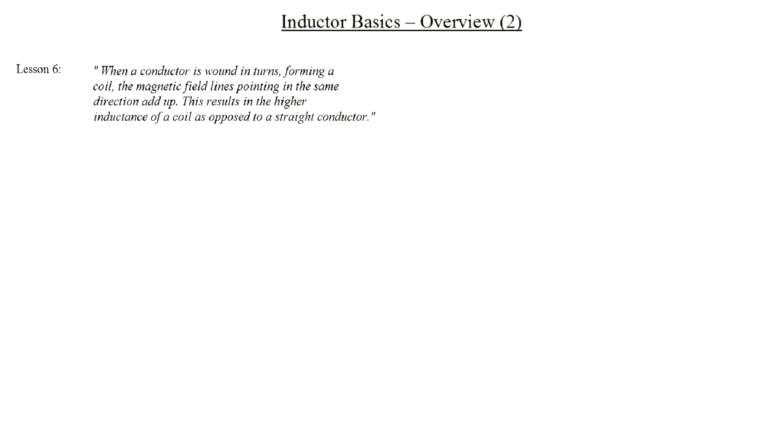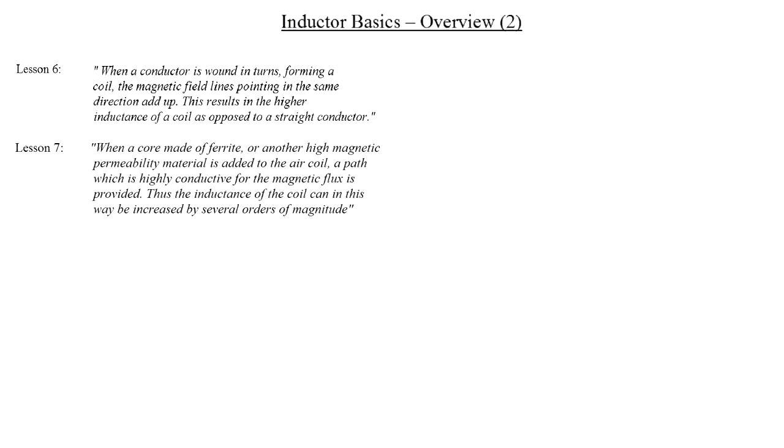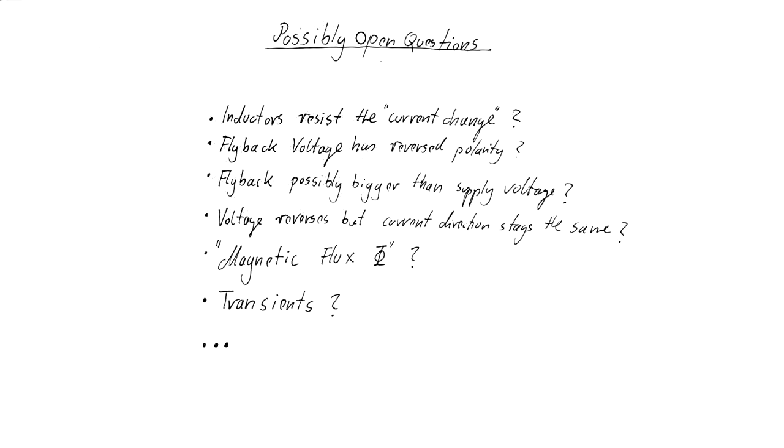Okay, so now that we have been talking so much about the magnetic circuit, let us again try to sum the most important insight up to another lesson. In my words, lesson seven would then be, when a core made of ferrite or another high magnetic permeability material is added to the air coil, a path which is highly conductive for the magnetic flux is provided. Thus, the inductance of the coil can, in this way, be increased by several orders of magnitude. Actually, I plan to cover even much more in this video, which needs to be known to answer the questions from the end of part four. But since this is already the longest in the series, I'll have to make yet another video about inductor basics.